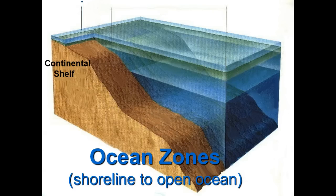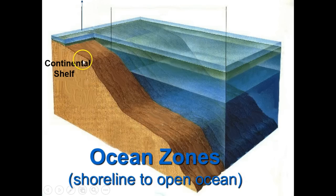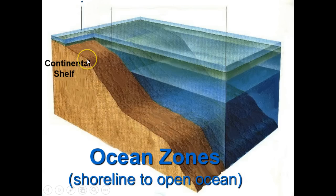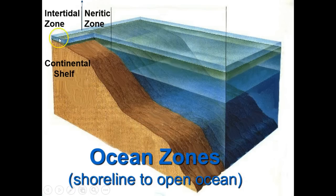We're going to start with ocean zones from the shoreline out towards the open ocean — moving horizontally. First, there's the continental shelf, which is the edge of the continent that is actually underwater, still considered part of the continent. At the edge of that shelf there's a drop-off. The main zones to cover are the intertidal zone, the neuritic zone, and the oceanic zone or open ocean.